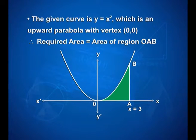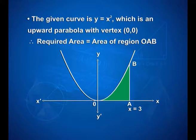Now look at the solution to the second question. The given curve is y is equal to x square, which is an upward parabola with the vertex at the origin (0, 0). The required area is equal to the area of region O, A, B, where x is equal to 3. The shaded area is to be calculated.